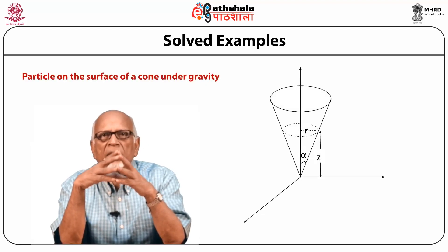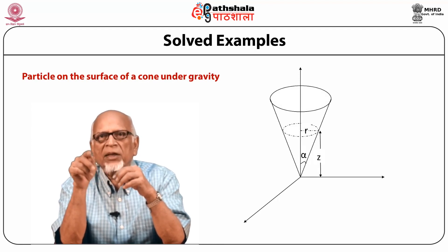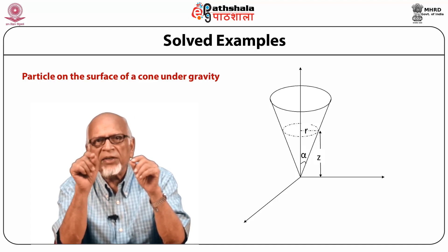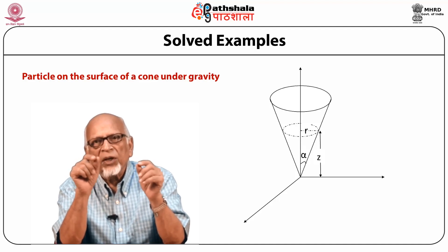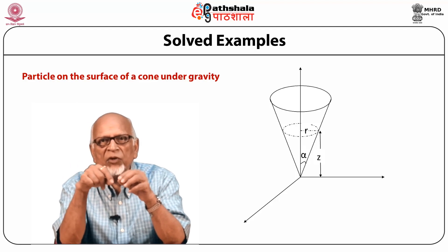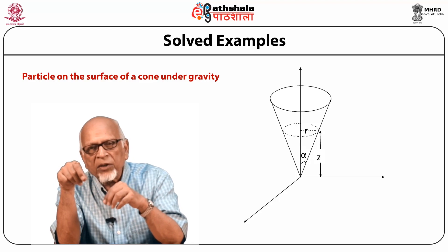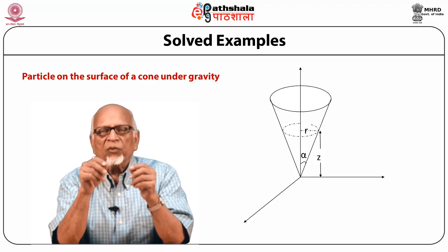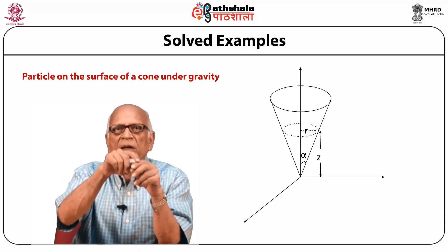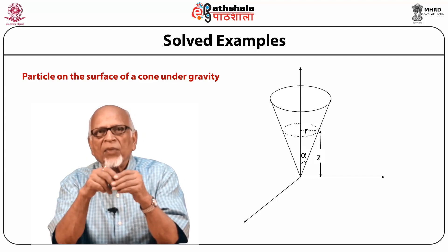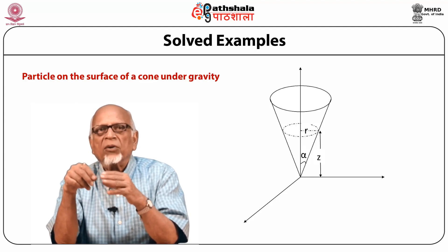Now we consider a bead which is constrained to move on a vertical circle under gravity. We have a bead of mass m which moves on a vertical circle of radius r under gravity. We set up the Lagrangian and the equation of motion for this problem. Since it is moving on a circular path, it has only one degree of freedom, which we choose to be the angle made by the radius vector from the center of the circle to the bead with the vertical. The Cartesian coordinates x and z on the circle in terms of the angle theta are: x = r sin(theta) and z = r + r cos(theta), with r fixed. We thus have the motion described by only one coordinate theta.